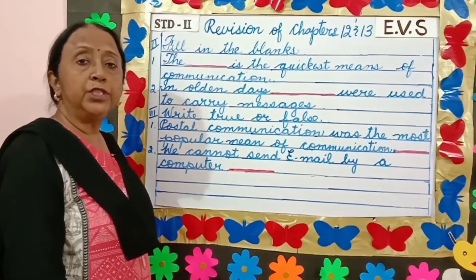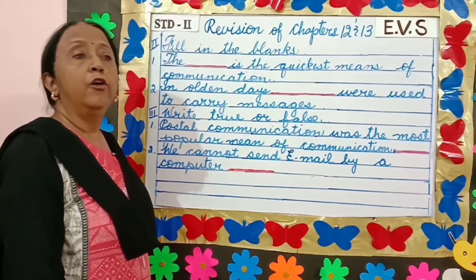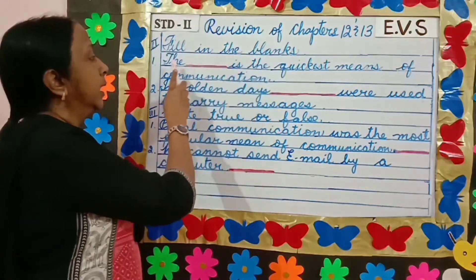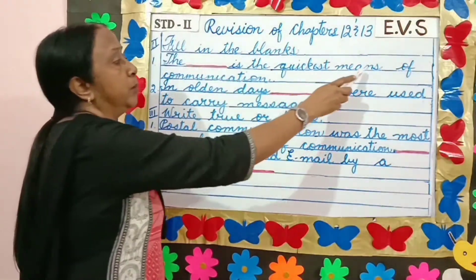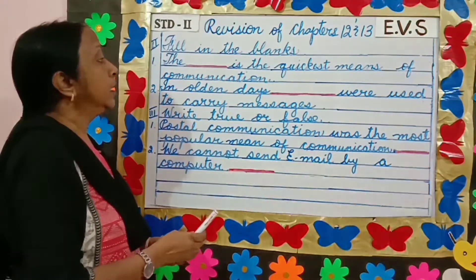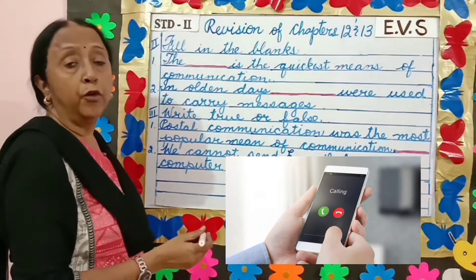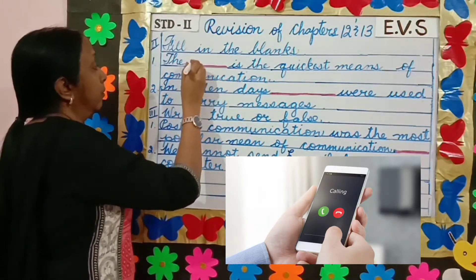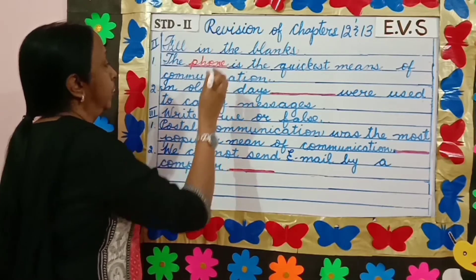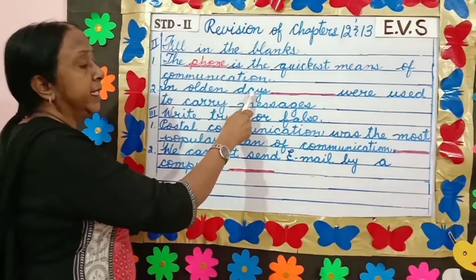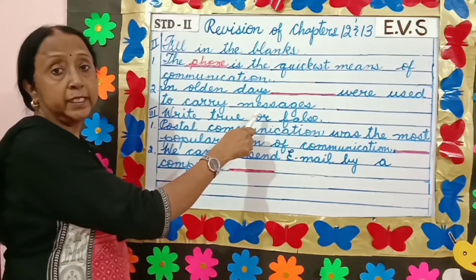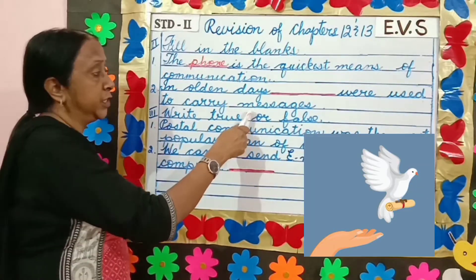Our next question is fill in the blank. The blank is the quickest means of communication. The phone. In olden days, blank were used to carry messages. Pigeons.